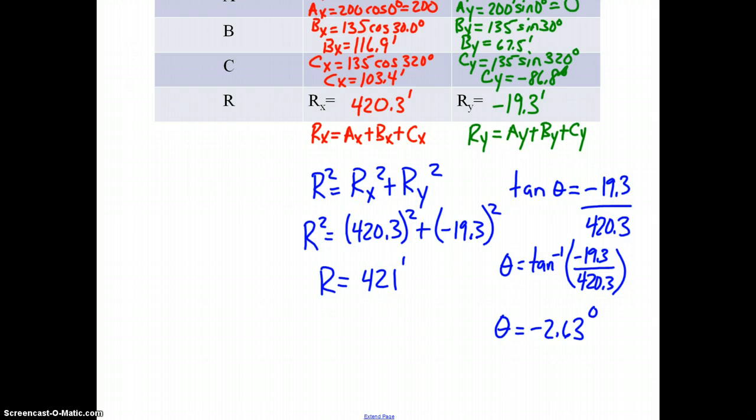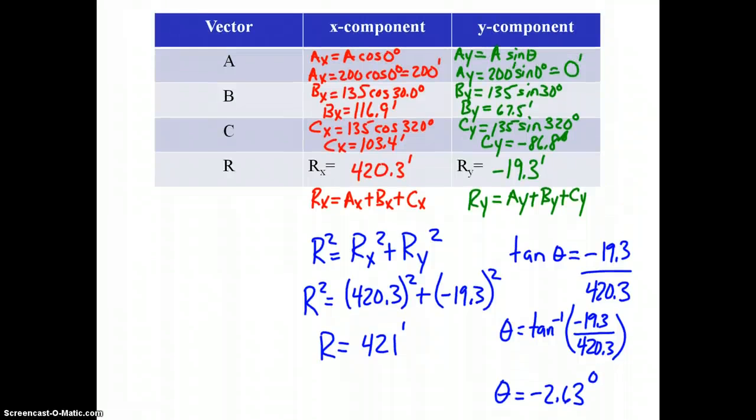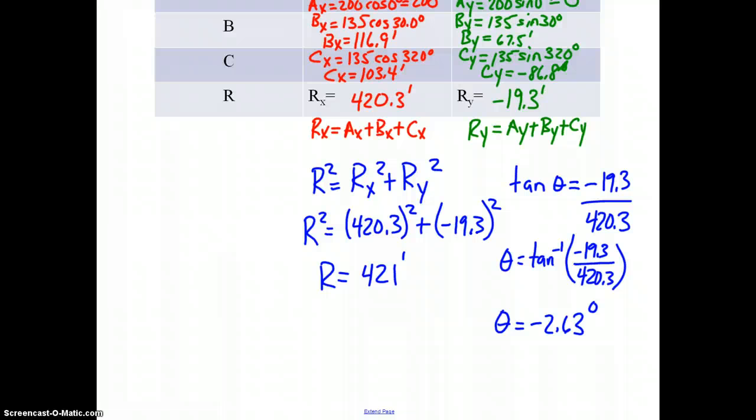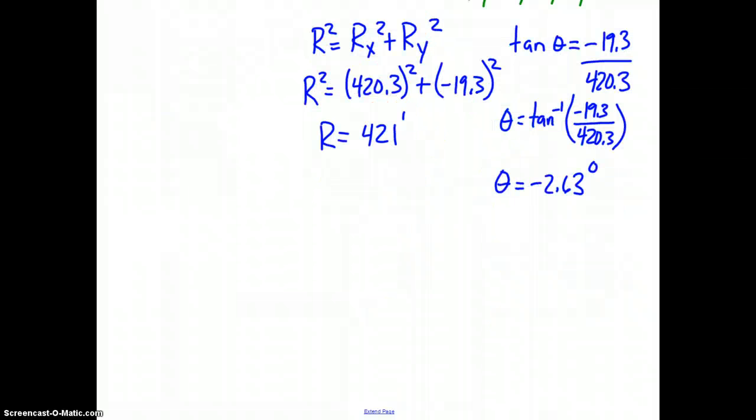Does our answer make sense with what we calculated? Based on our diagram it does. We have a resultant of 421 feet and it's 2.63 degrees below the x-axis. So we express our final answer R equals 421 feet at negative 2.63 degrees, and that's all we need to say because everybody understands where that is on the rectangular coordinate system.